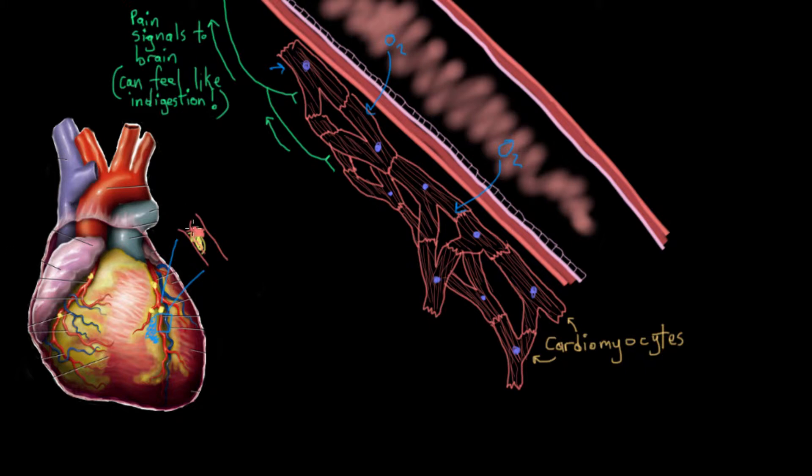The clot is actually still growing, and it's now blocking like two-thirds of the artery. Your pain will start to get worse. Some people might start to get pain in their arms, and mostly we see it in the left arm.